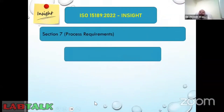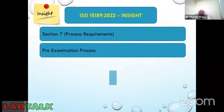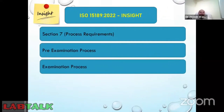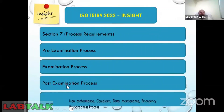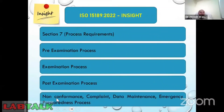Clause seven covers process requirements, including pre-examination processes, examination processes, post-examination processes, handling of non-conformance events, complaint handling, data maintenance processes, and emergency preparedness of your laboratory.